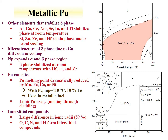Plutonium also forms alloys with a number of different metals. Some metals can stabilize the delta phase at room temperature, including some tetravalent elements. The delta phase can also be stabilized with rapid cooling. Neptunium stabilizes the alpha and beta phase region. The beta phase can be stabilized at room temperature with hafnium, titanium, and zirconium.